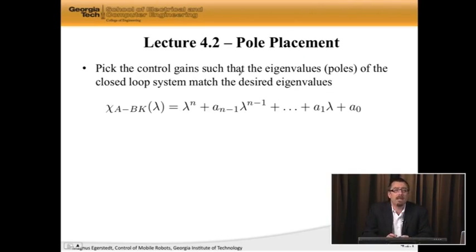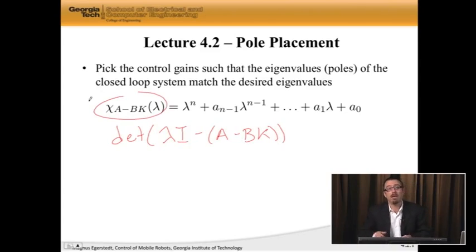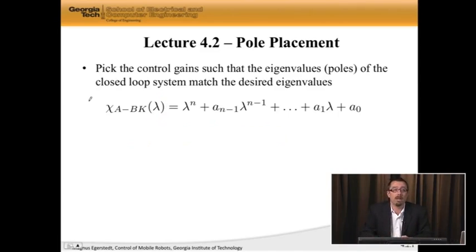Let's say the characteristic equation associated with the closed loop system is the determinant of λI - A - BK. If I compute this, I get the following expression.